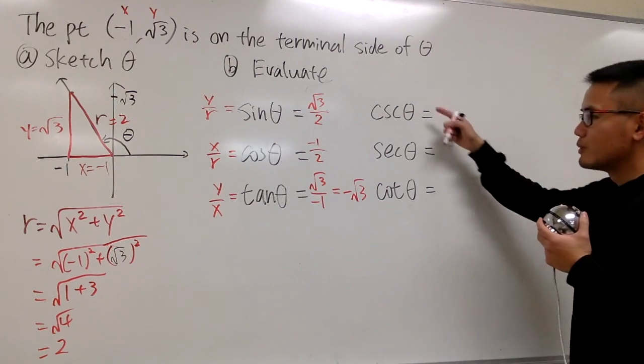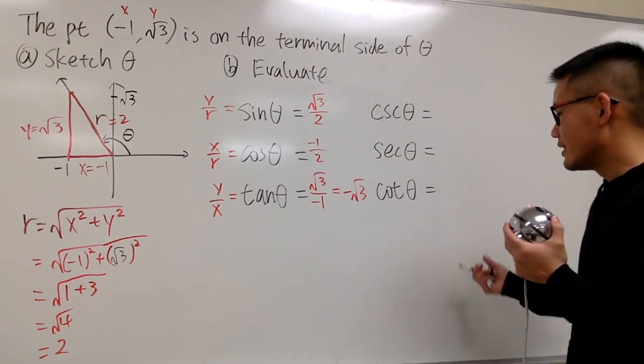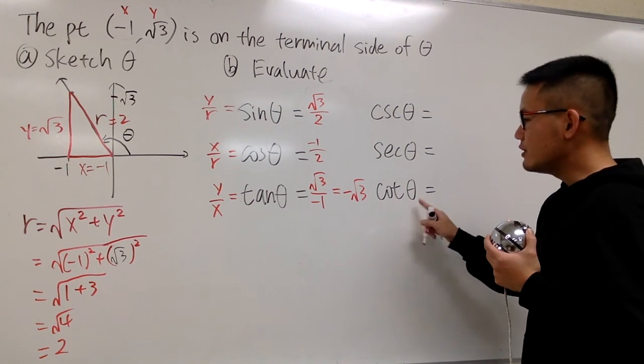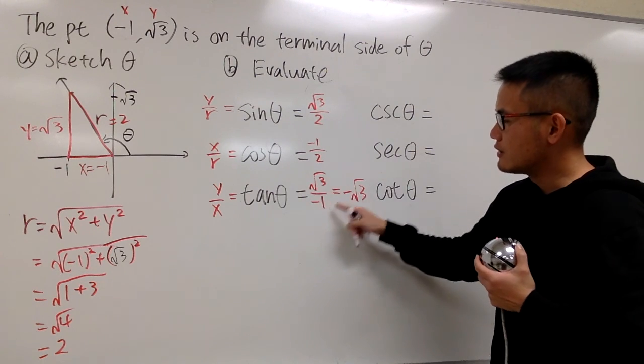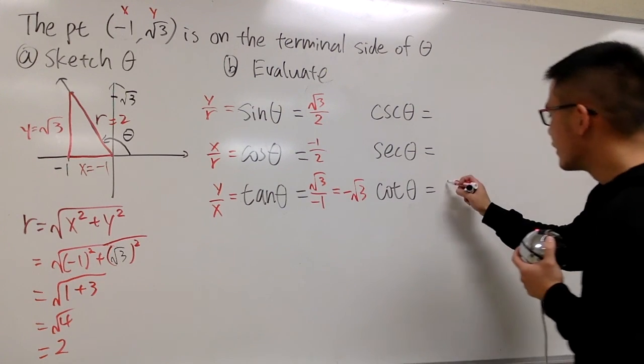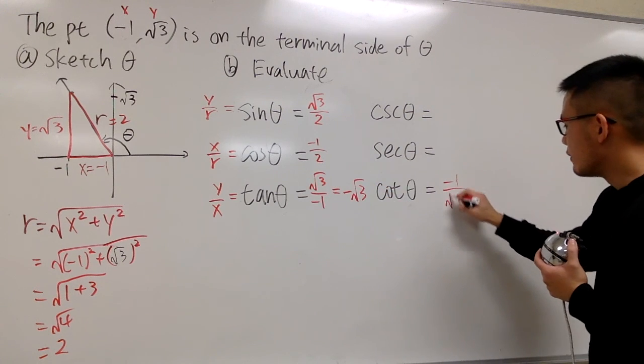And now moving on to these right here. And once again, let me just do it for this one first. Cotangent theta is the reciprocal of tangent. Let's look at this fraction. I will put this down as negative 1 over square root of 3.